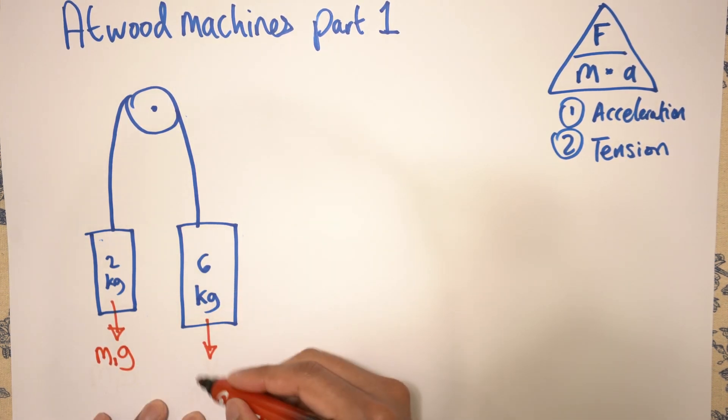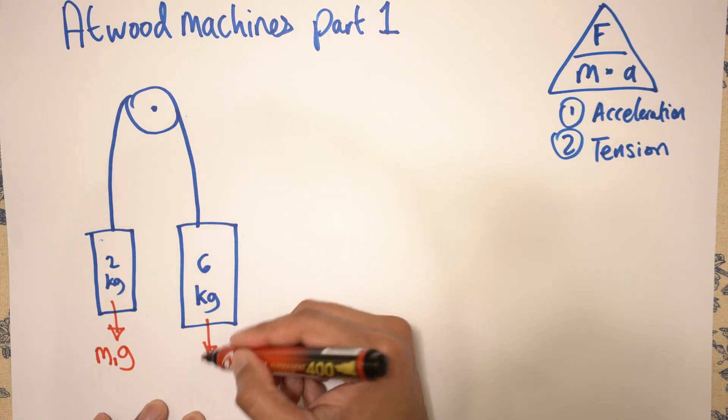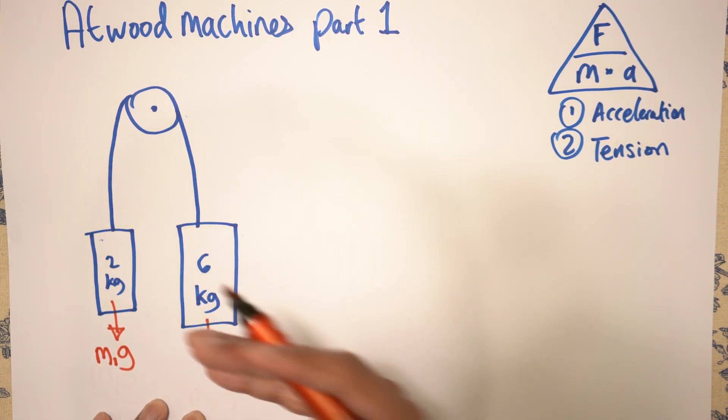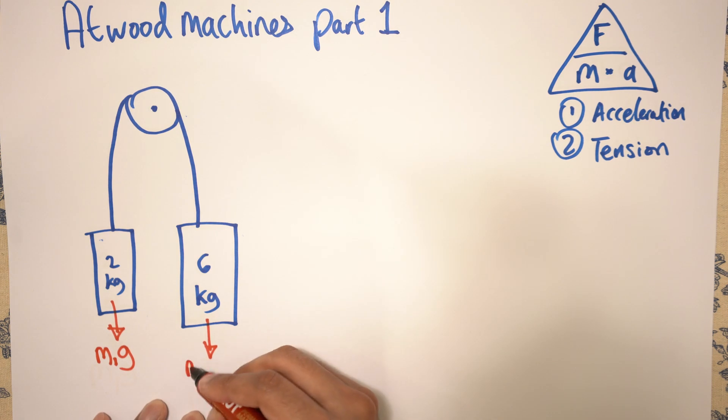And this is mass 2, and the force down here is the weight. You work out weight as mass times gravity, so you can write here m2g like that.